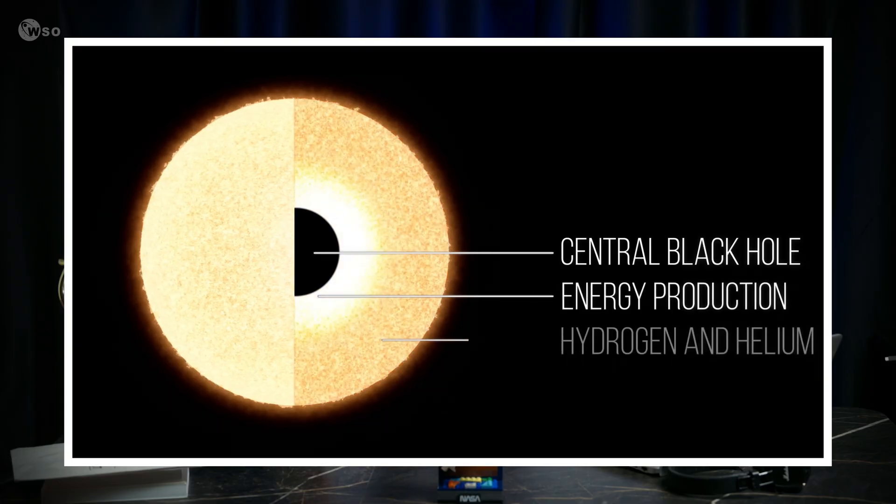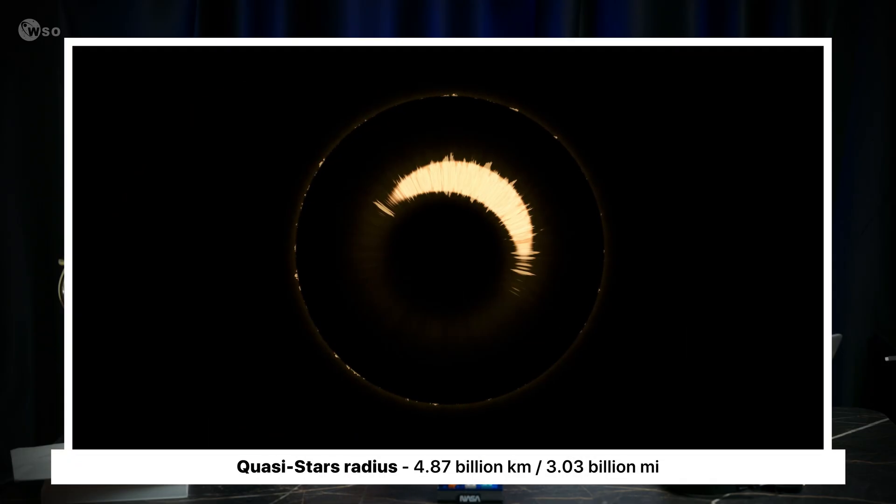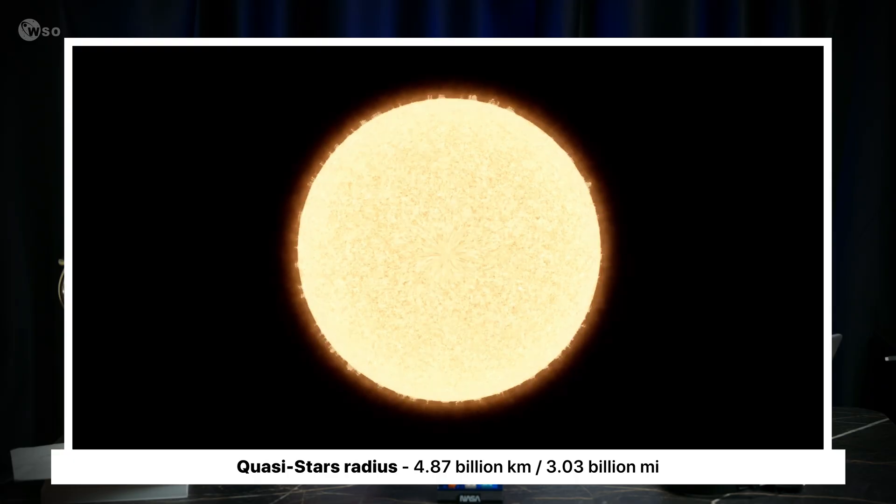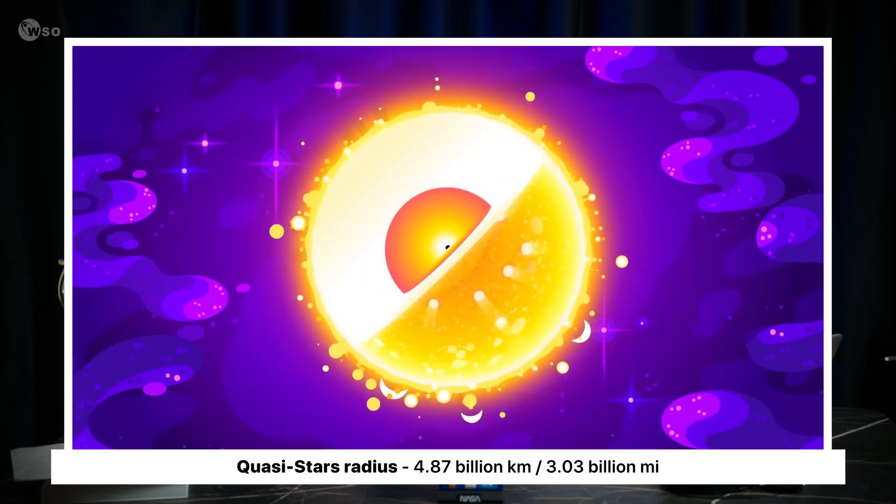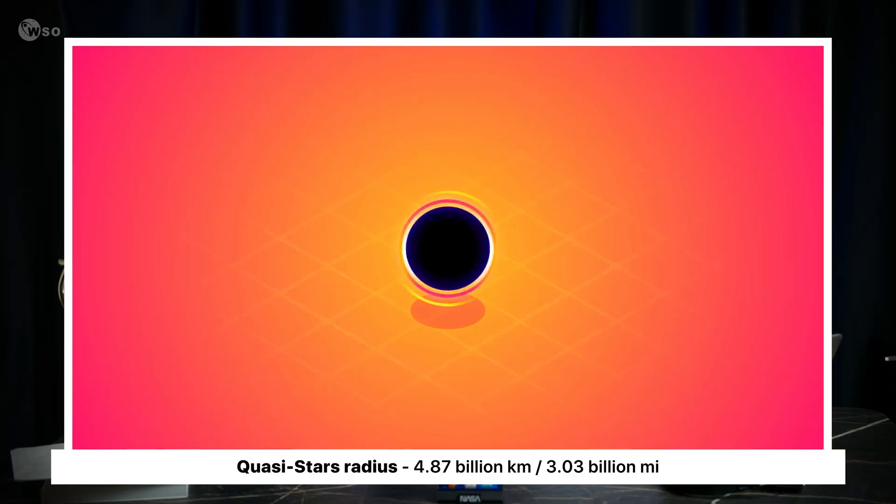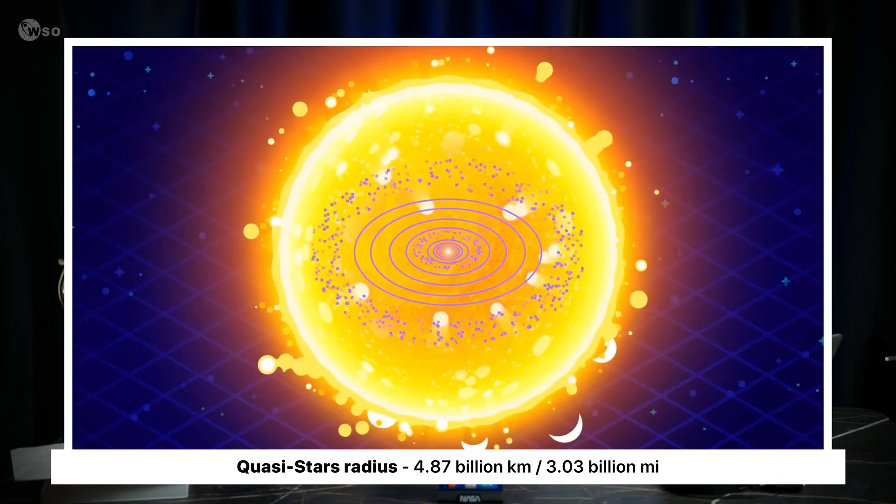The energy from the black hole feeding would act like a pump, inflating the star's gas layers to unimaginable sizes, possibly up to 7,000 solar radii. That is an object so large it would swallow our entire solar system, past Pluto and the Kuiper Belt.